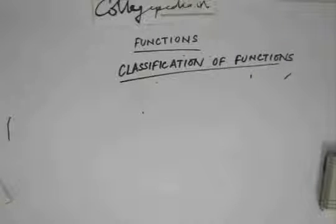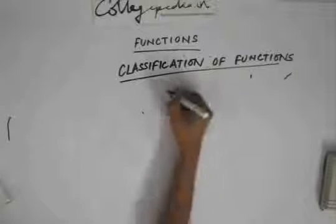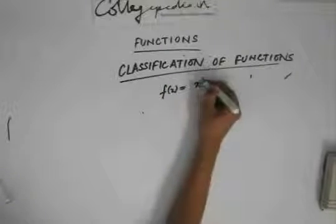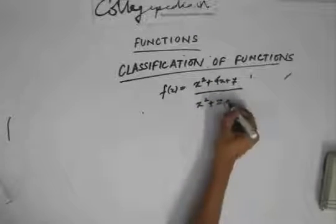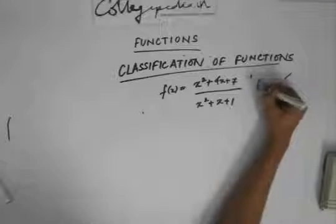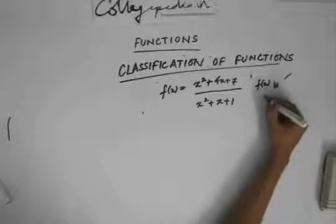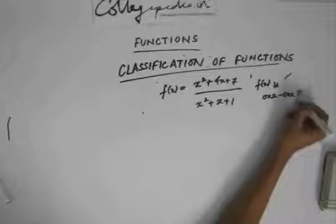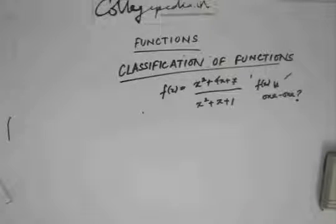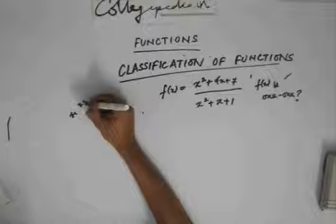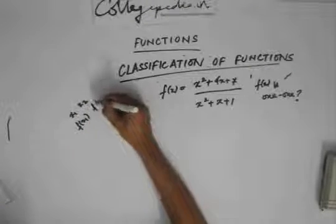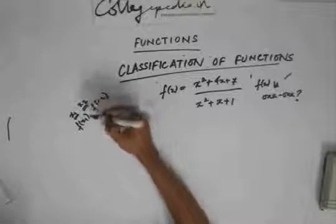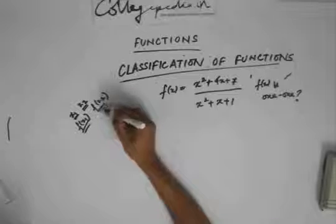Let's say I have been given a function f of x as x squared plus 4x plus 7. I am asked to see if this function f of x is one-to-one. To find this, I will take two elements x1 and x2 which are different and find what is f of x1 and f of x2. Since I have taken these two different, if the function is one-to-one, then f of x1 shouldn't be equal to f of x2.